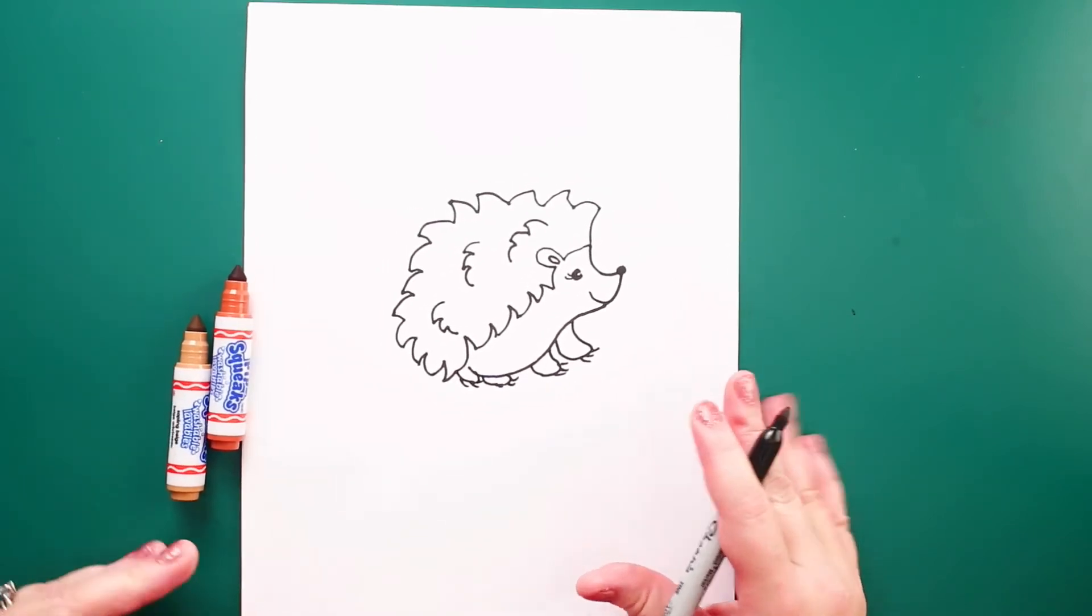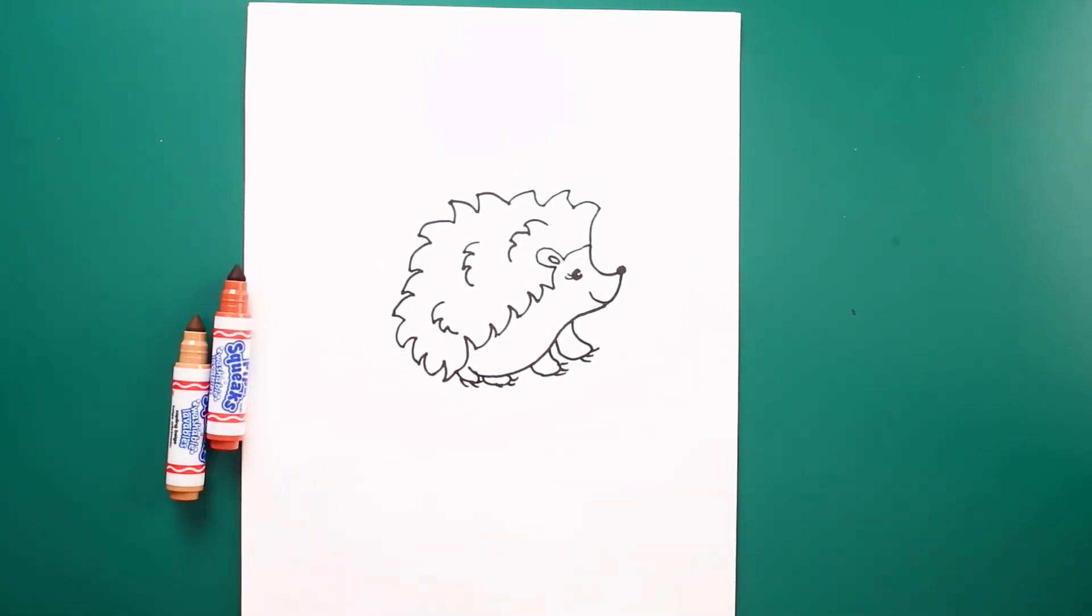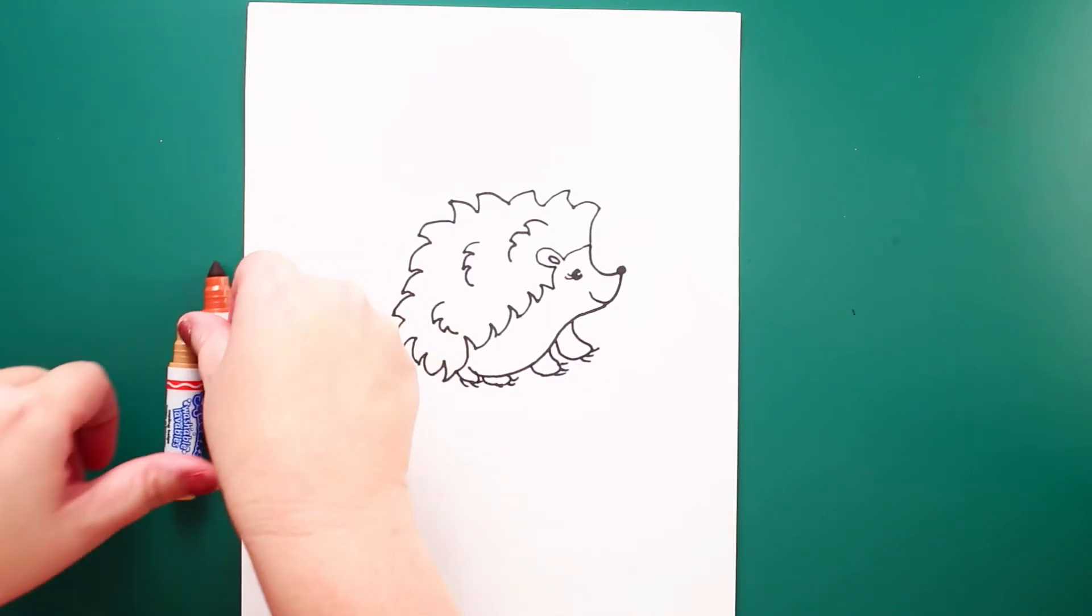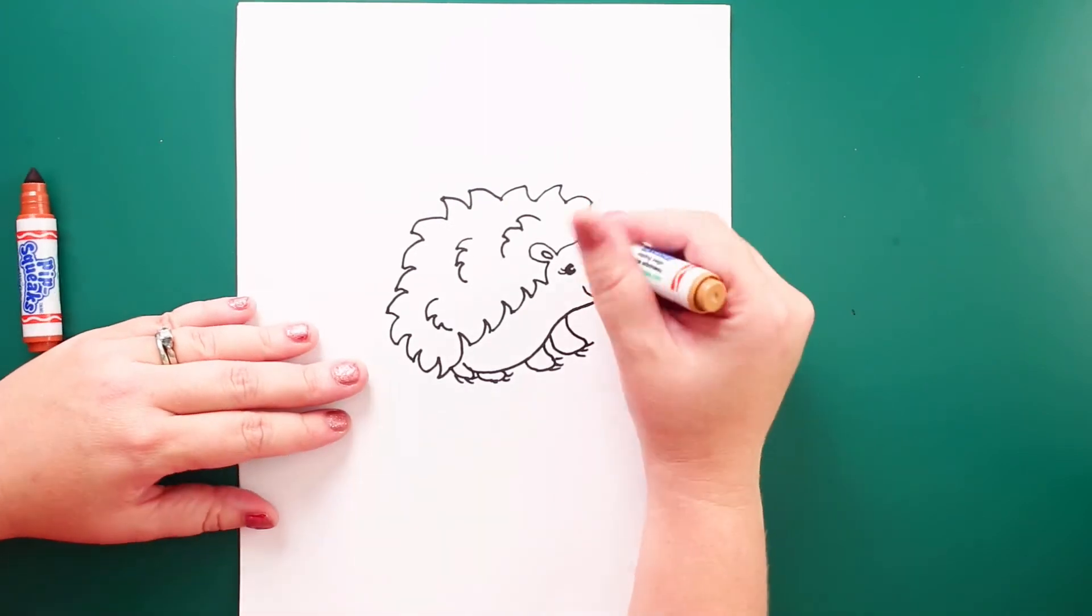Nice. We've got the outline of our hedgehog. Next thing I'm going to do is color the under part of her body.